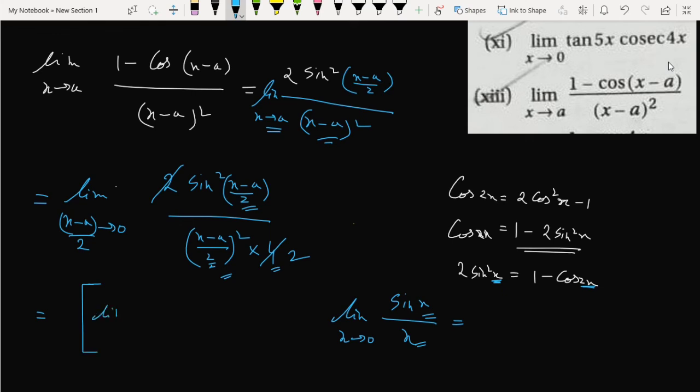So this formula, or this limit, can go through like this: x minus a tends to 0, sine x minus a by 2, by x minus a by 2 whole square, and 1 by 2 is outside the limit.